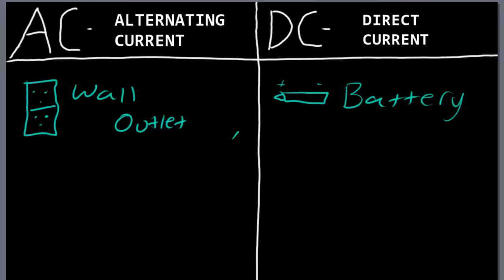Alternating current can be converted into direct current and vice versa. Direct current can be converted into alternating current with the help of some special electronic devices. So when you plug your phone into the wall outlet at night, what the charger actually does is it takes the alternating current coming out of the wall outlet, it converts it into DC current, direct current, and then it gives it to your phone to charge the battery in your phone.